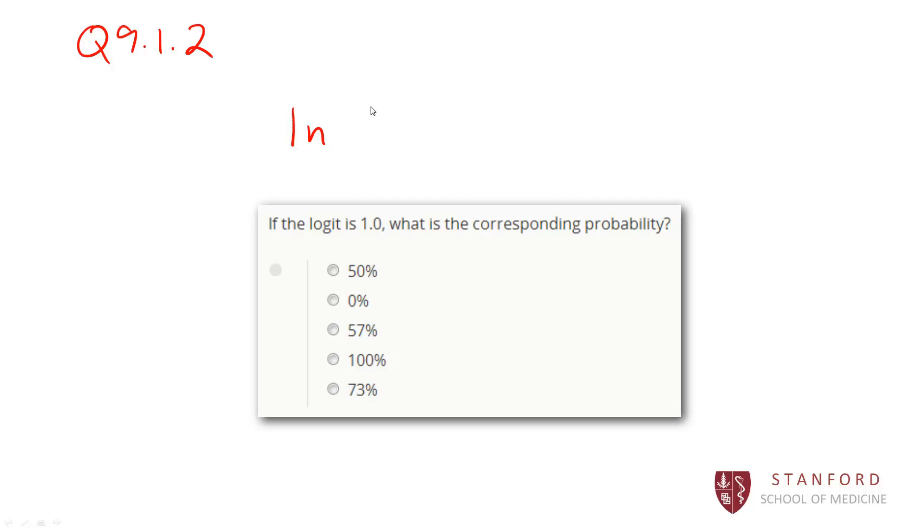If the logit, again, the natural log of p divided by 1 minus p, then the log odds is equal to 1.0, what's the corresponding probability going to be? Well, you could use some algebra to solve this. You could also see that in some of the modules I alluded to that there's a little formula to solve this.